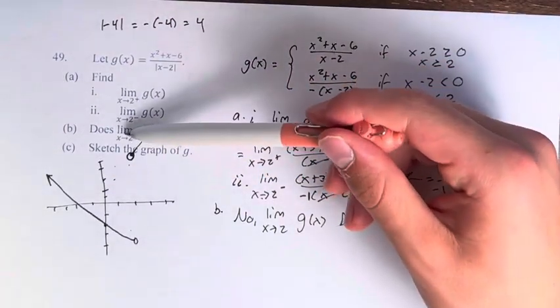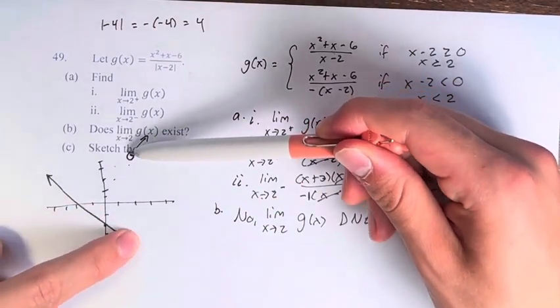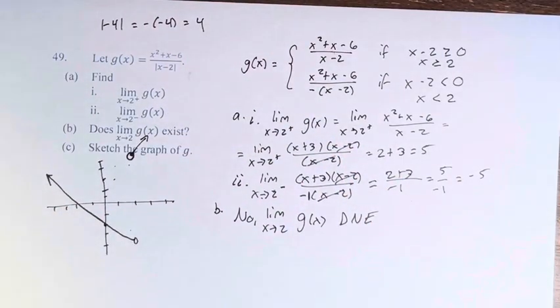And we can see why the limit as x approaches 2 doesn't exist, because they're coming at completely different values as we approach from different sides.